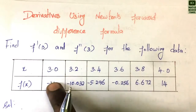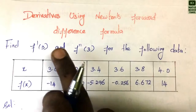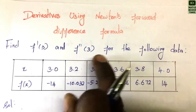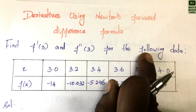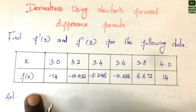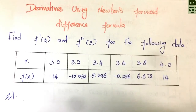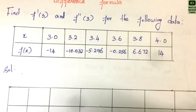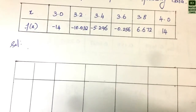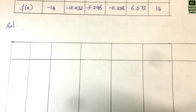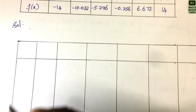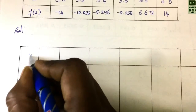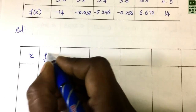We will find F'(3) and F''(3). Given x and F(x), we will form a divided difference table and find the derivative values.